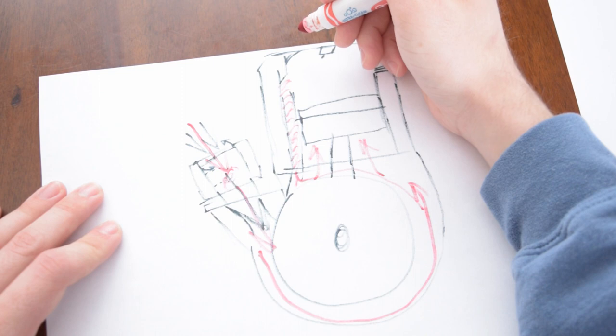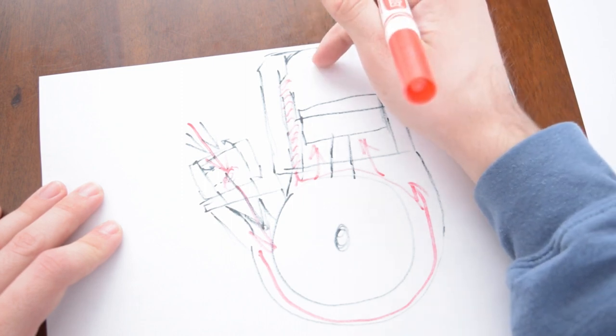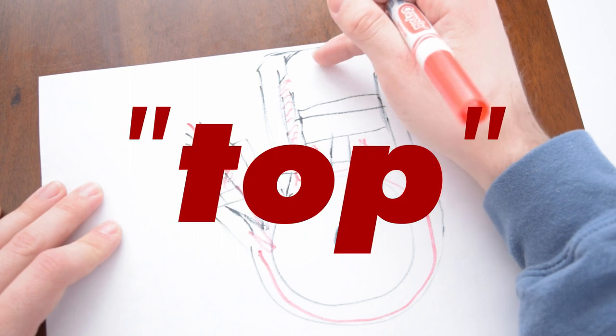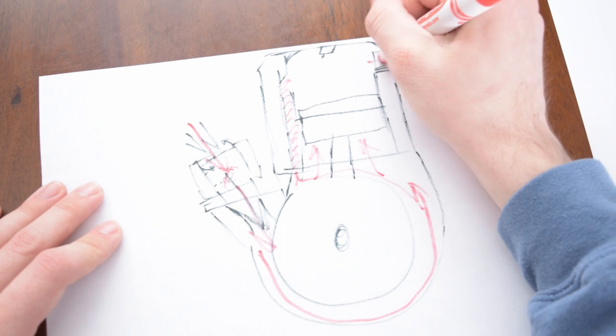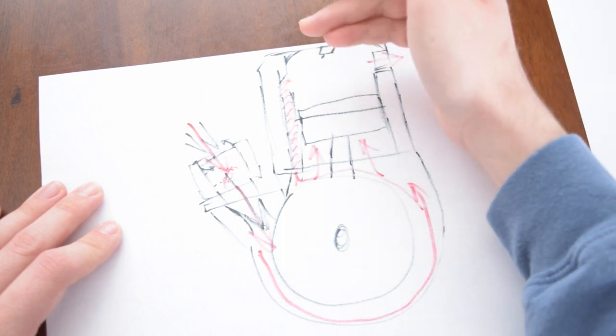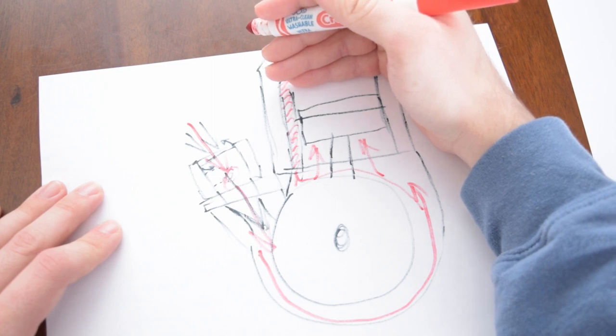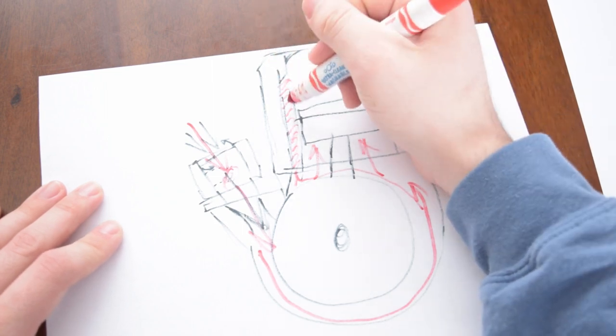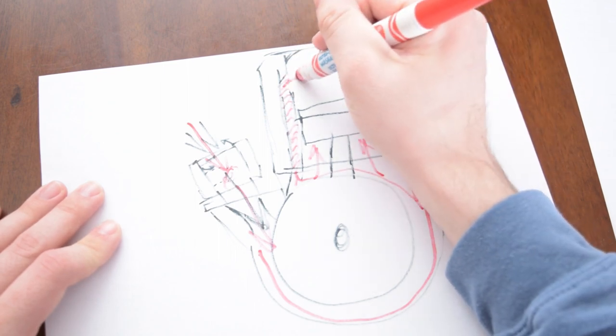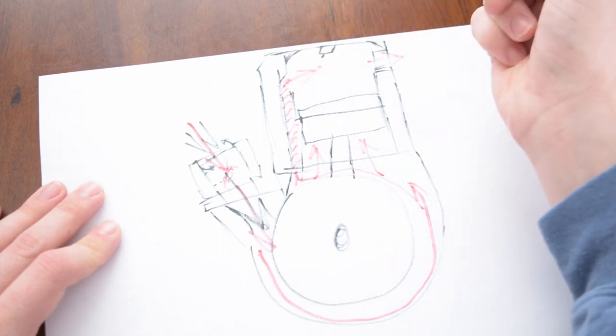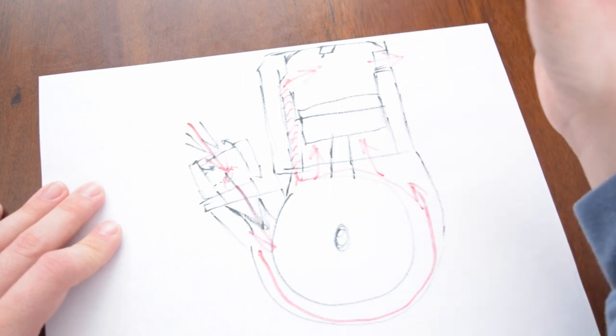And as the piston comes back down from bottom dead center it first opens this port here which will be the exhaust port. And then slightly down after that exhaust port opens it opens the transfer ports right here. So that lets all that fresh mix pour in and push out whatever exhaust there is.